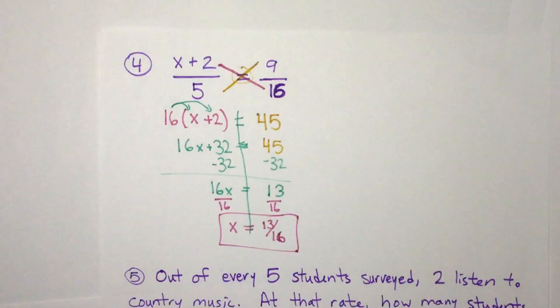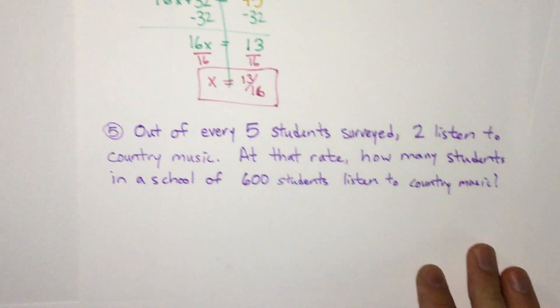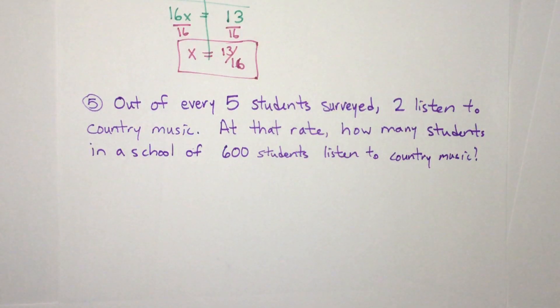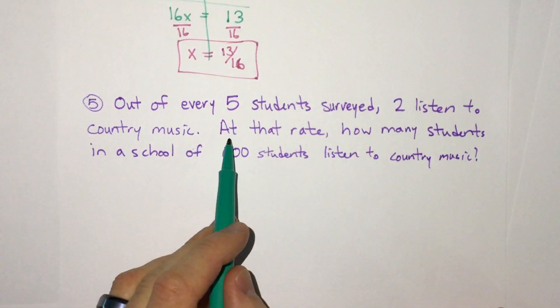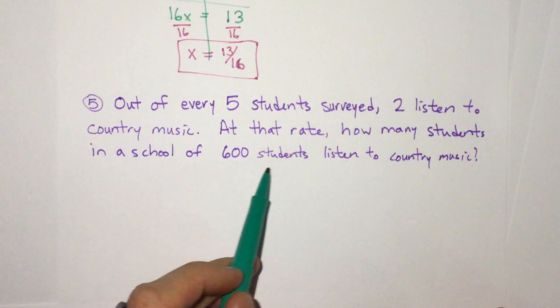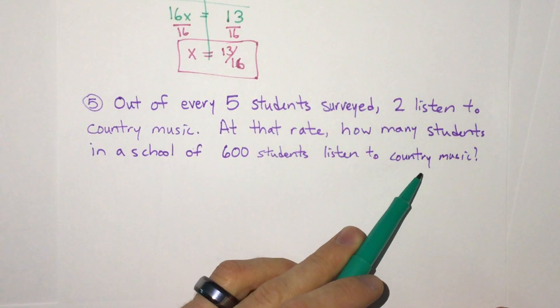Last, we're going to look, as said earlier, at a word problem. And once it's set up, it's fairly easy like the others, but the key is setting it up. This says, out of every five students surveyed, two listen to country music. And then it asks, at that rate, how many students in a school of 600 students listen to country music?